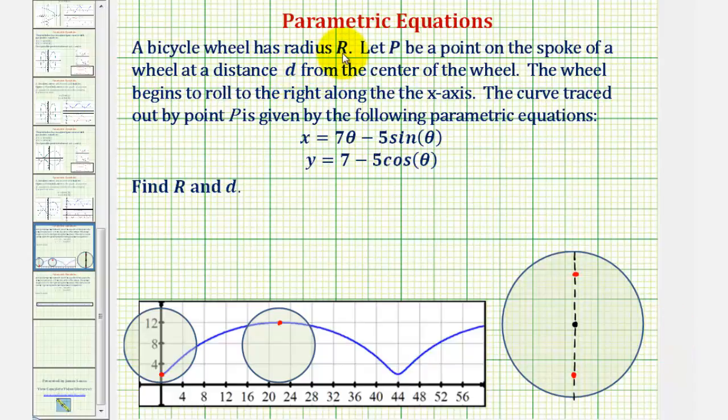A bicycle wheel has radius r. Let p be a point on the spoke of a wheel at a distance d units from the center of the wheel. The wheel begins to roll to the right along the x-axis, and the curve traced out by the point p is given by the following parametric equations.